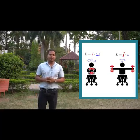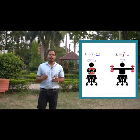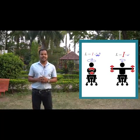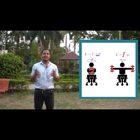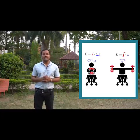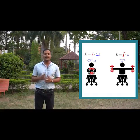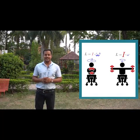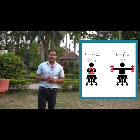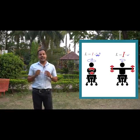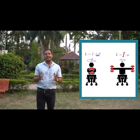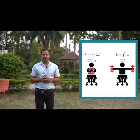The Angular Momentum Principle says that if a body has an axis and if the net torque is zero, then the angular momentum is constant. The angular momentum of a body about an axis is I times omega.